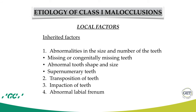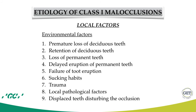Local factors can be divided into inherited factors, including abnormalities in the size and number of teeth such as missing or congenitally missing teeth, abnormal tooth shape and size, and supernumerary teeth. Also included are transposition of teeth, impaction of teeth, abnormal labial frenum, and environmental factors such as premature loss of primary teeth and retention of primary teeth.